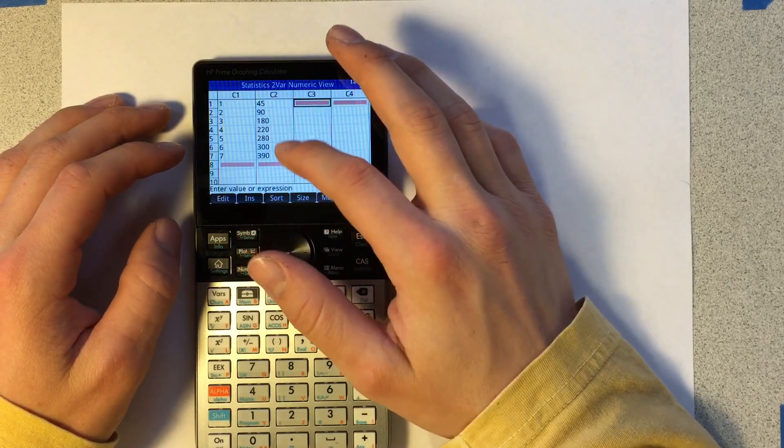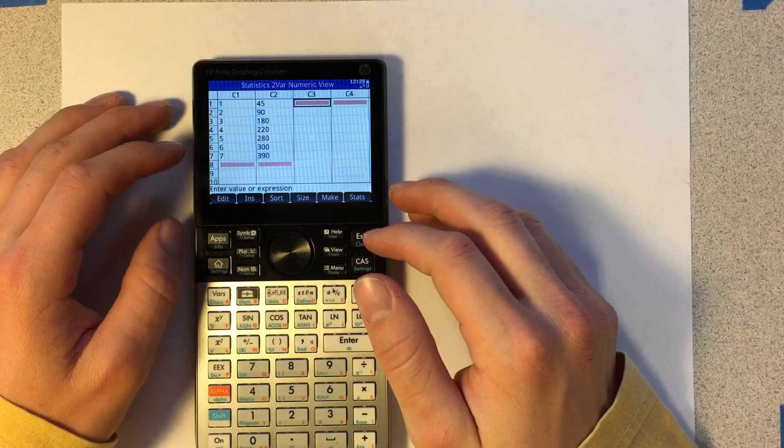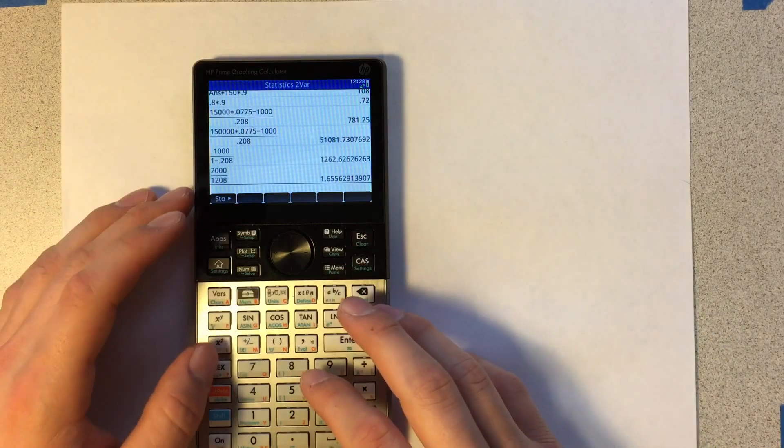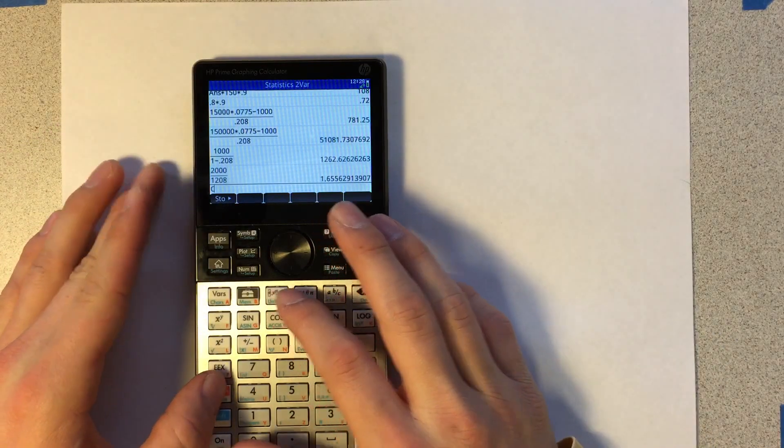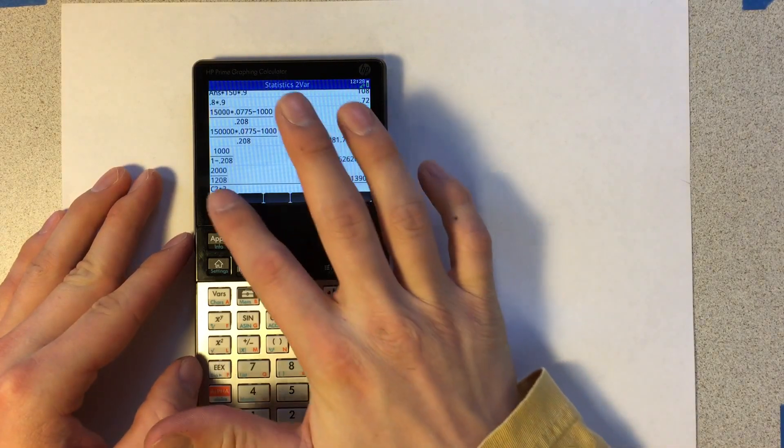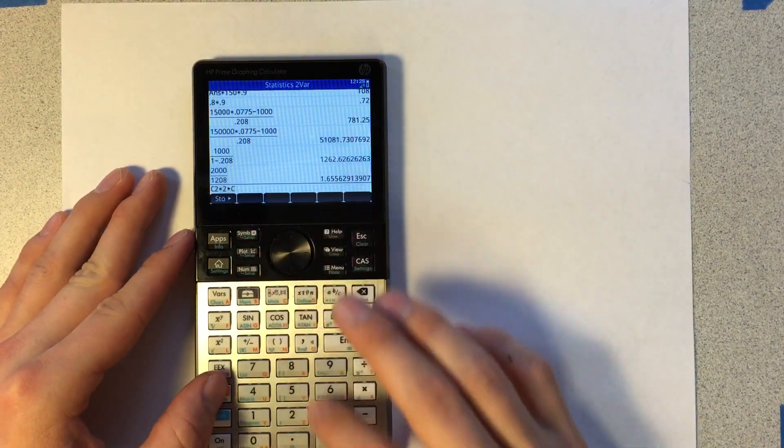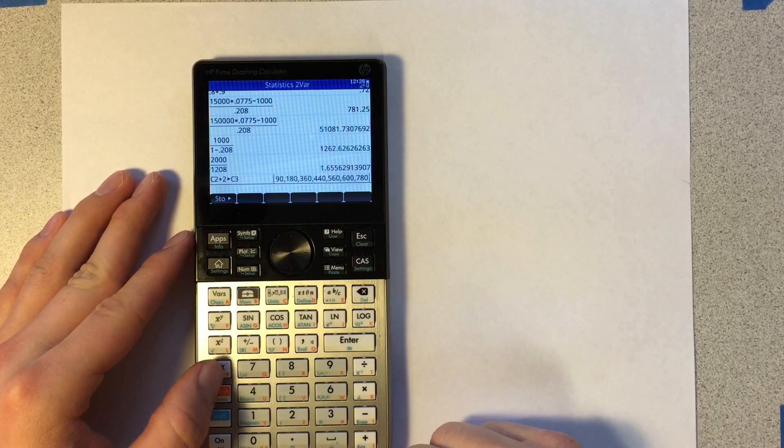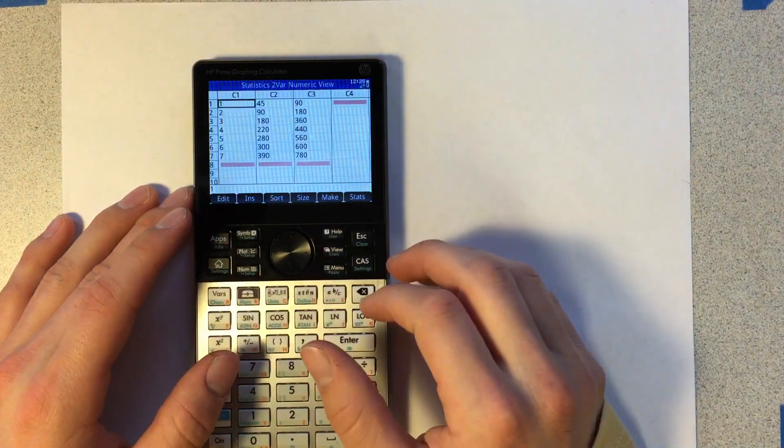C3, I actually want to be C2 times two, so I'm just going to go to home, and I'm going to go C2 times two, store C3. Now there is C3, if I go back here, I have C3.